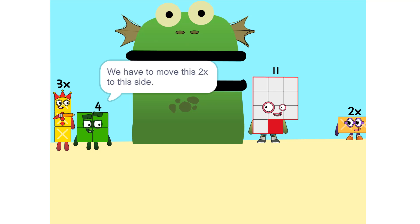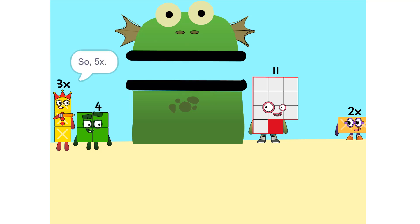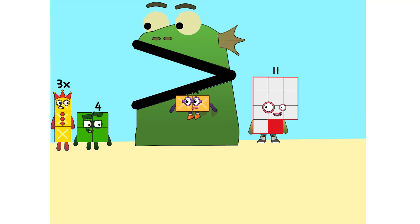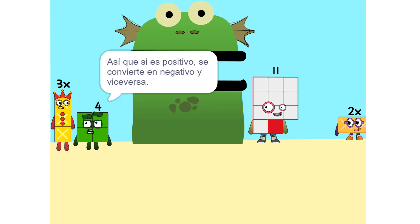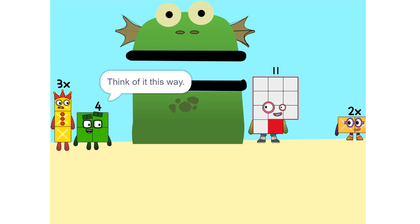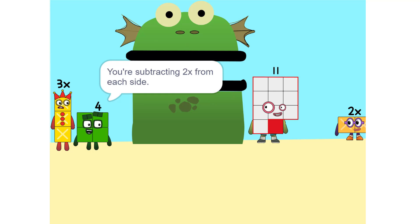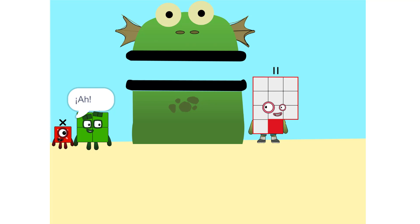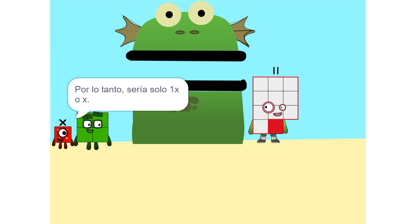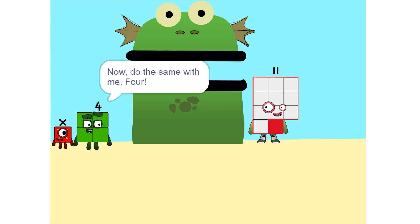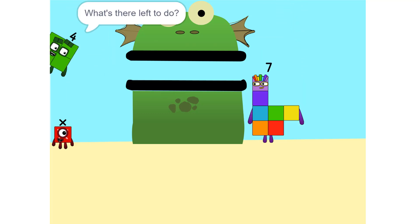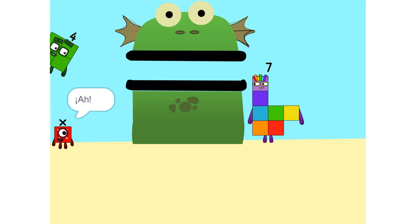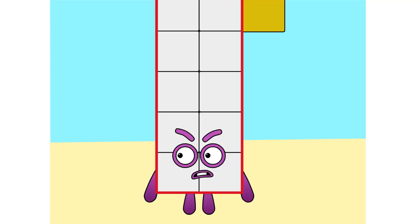Ahora tenemos que cambiar las cosas. Tenemos que mover esto dos veces hacia este lado. So five x. Siempre que cambies de lado tienes que cambiar su signo — si es positivo se convierte en negativo y viceversa. ¿Por qué? Piénsalo de esta manera: estás restando de cada lado. Entonces sería solo una x. Correcto. Ahora haz lo mismo con 4. ¿Qué queda por hacer? X es igual a 7. ¡Así que soy 7!